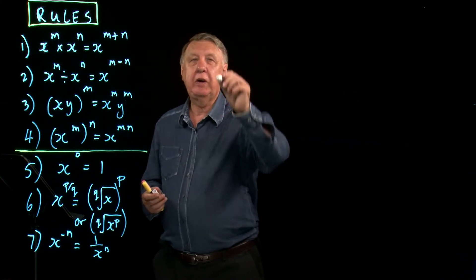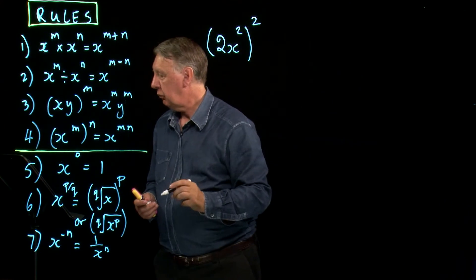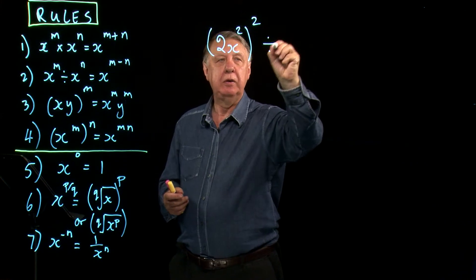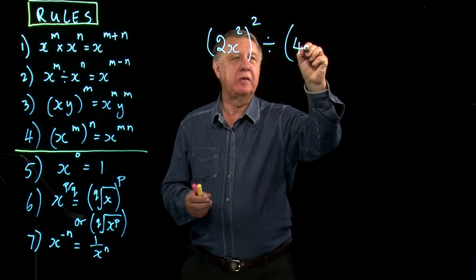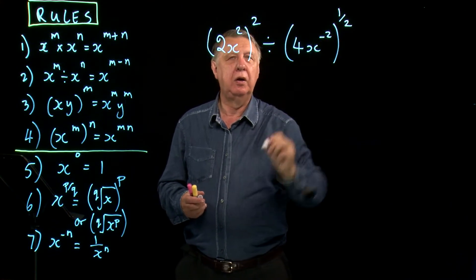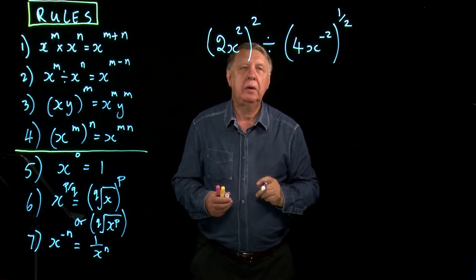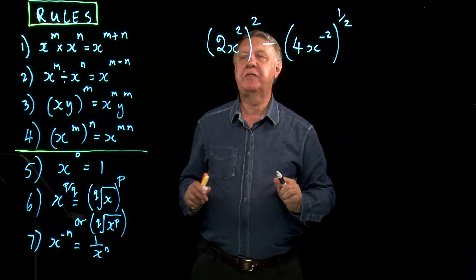So we're going to look at simplifying (2x²)² divided by (4x⁻²) to the power a half. Okay, so we need a strategy.